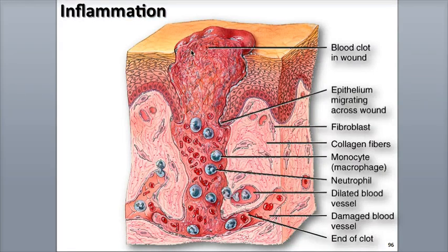In the inflammatory phase, a blood clot forms in the wound and weakly bonds with the edges of the wound. During inflammation, a series of events takes place that serves to help destroy microbes, foreign matter, and dead and dying tissues.